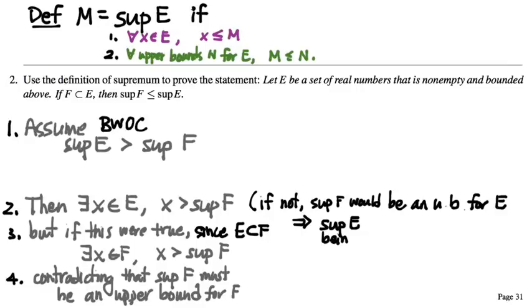What does supremum mean again? Supremum of E is the least upper bound. And so if supremum of F were an upper bound for E, then the supremum of E would have to be less than or equal to it, right? Because it's the least upper bound.